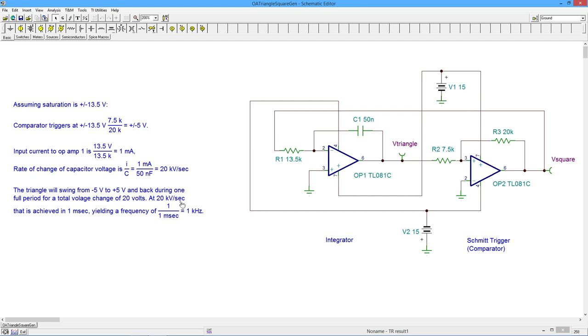At 20,000 volts per second, that's going to take one millisecond. So that's the period. One over that is one kilohertz. So we expect to see a one kilohertz triangle wave coming out of here and a one kilohertz square wave coming out of here. This amplitude is about 5 volts peak, this about 13 and a half.